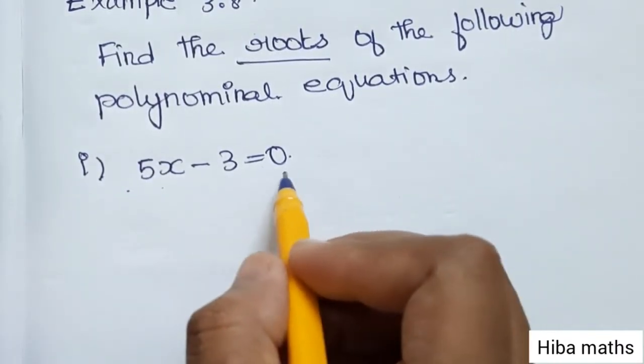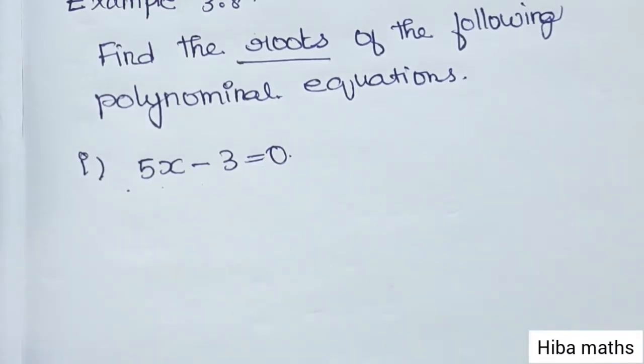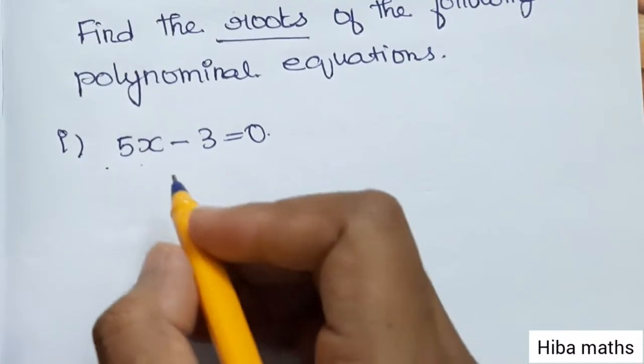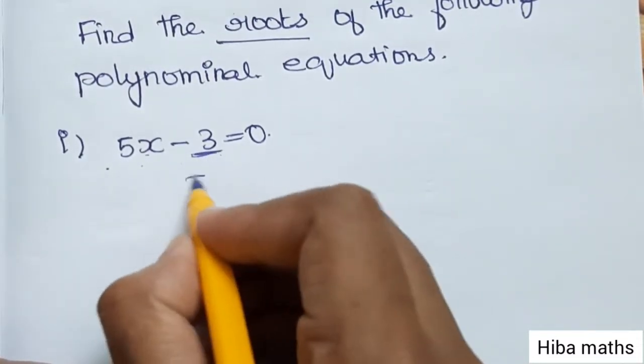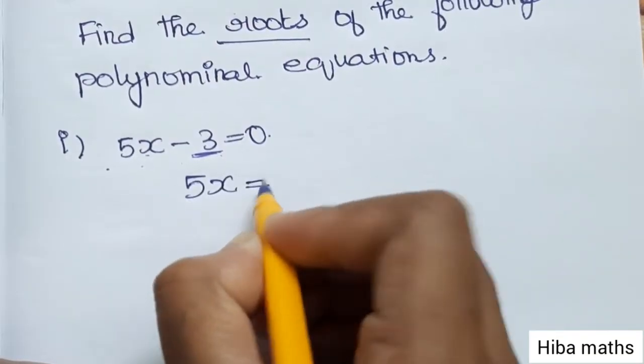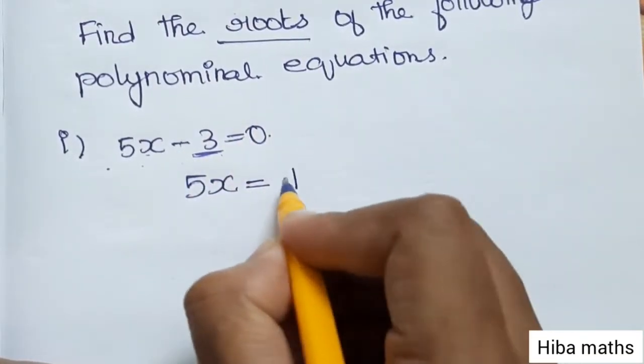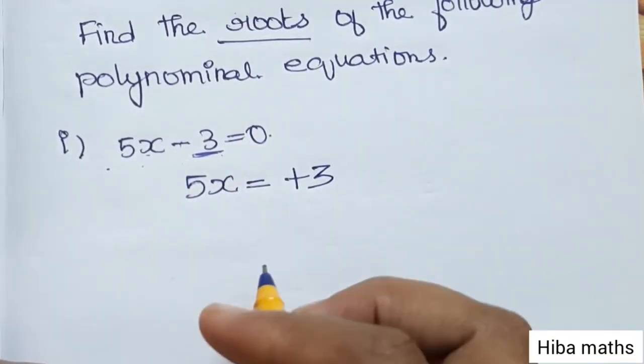First question: 5x - 3 = 0. If the sum is equal to 0, then we will add 3 to both sides. In the next step, we have 5x = +3.